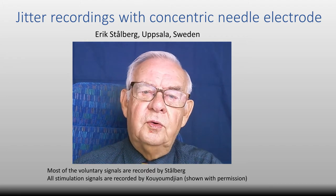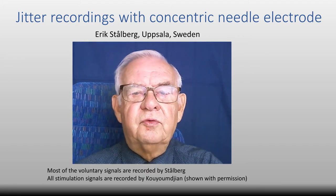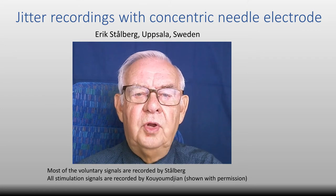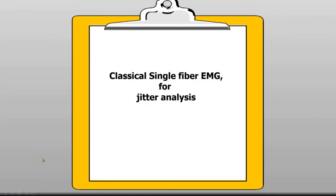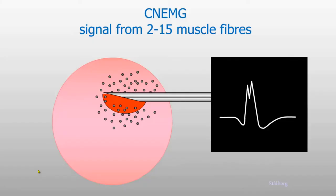In this video we are going to discuss the use of concentric needle electrode for the recording of jitter. But first, a few words about the classical single fiber EMG and some of its principles. Here is the recording area of a concentric needle electrode, and there were many fibers here to be recorded, which was not a good idea to obtain activity from just one muscle fiber.